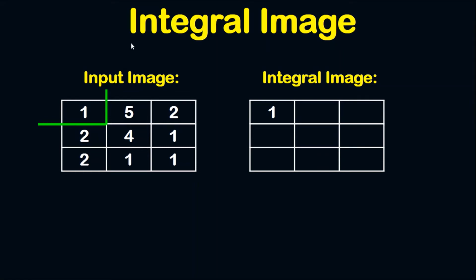In this tutorial we are going to get the integral image. Let's say we have an input image and we want to get the integral image. To get the value of the first pixel in the integral image, go to its corresponding cell in the input image and draw a right angle like this, then sum the values in this right angle. The sum is 1, so the result of this pixel in the integral image will be equal to 1.